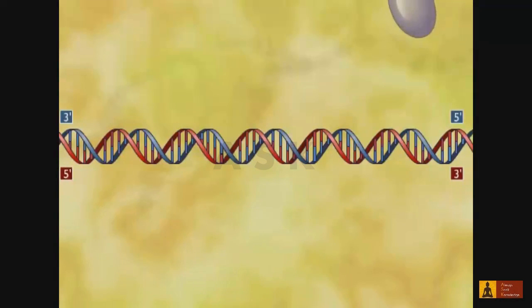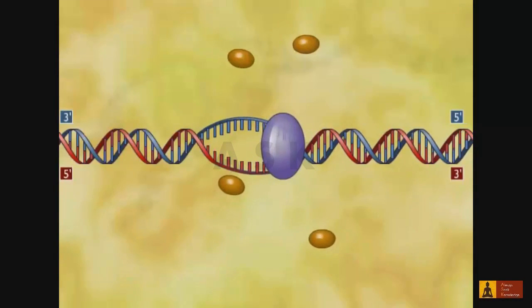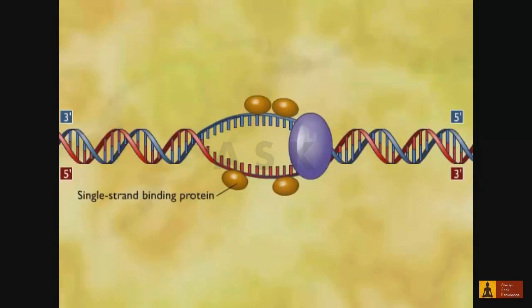The replication of DNA begins at a sequence of nucleotides called the origin of replication. Helicase unwinds the double-stranded DNA helix and single-strand binding proteins react with the single-stranded regions of the DNA and stabilize it.